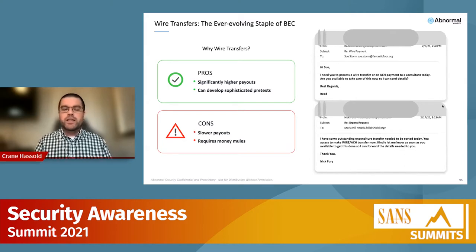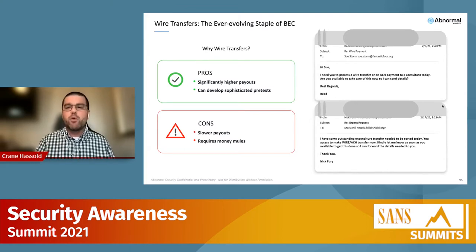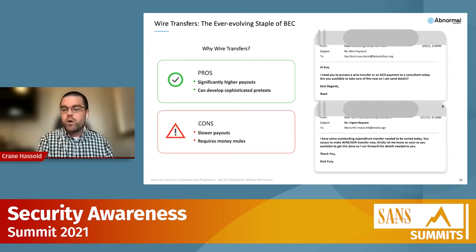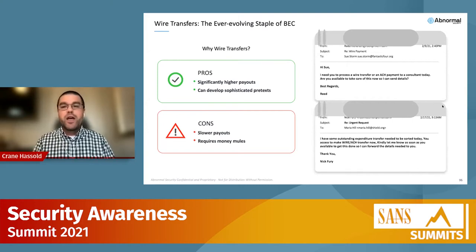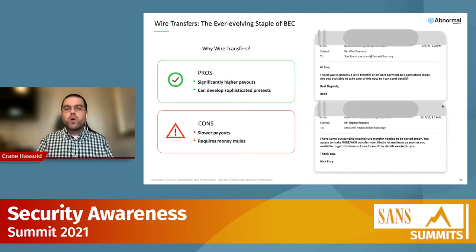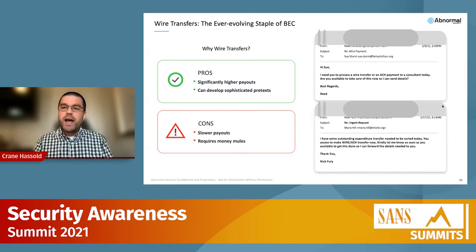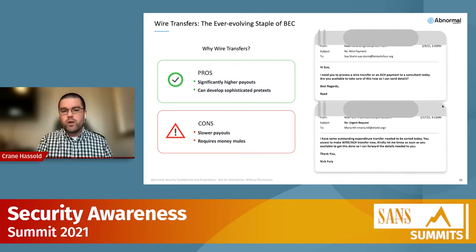On the downside, while payouts may be higher, they take a lot more time. Getting money from the target organization to the scammer requires multiple channels — wired to a bank account, through a mule account, through a number of hops where you're also losing money along the way. It also requires money mules, a third party receiving and passing on the money — which other BEC attack types don't require.